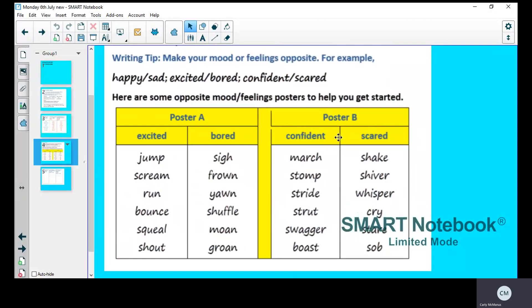And then again, we've got two opposite feelings. A place might have come across quite confident, and then afterwards quite scared. So we've got the confident: march, stomp, stride, strut, swagger, boast. And then scared: shake, shiver, whisper, cry, stare, sob.